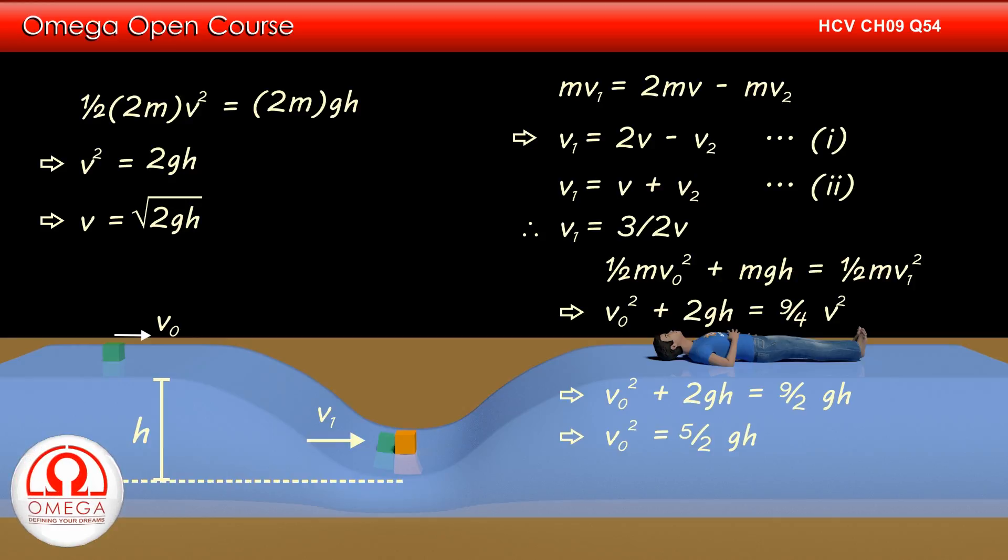Simplifying, we get v₀² = 5/2 gh or v₀ = √(5gh/2). Thus, the minimum speed with which the first block should be pushed is √(5gh/2). This is our answer.